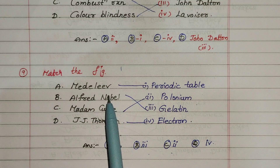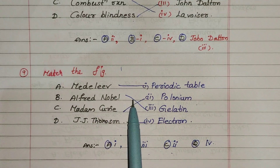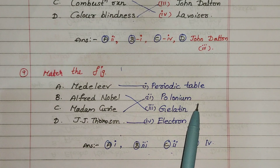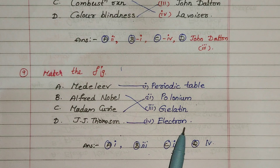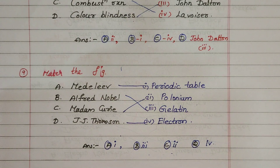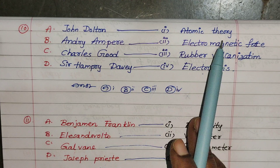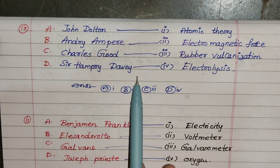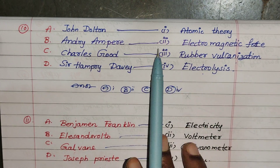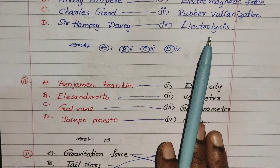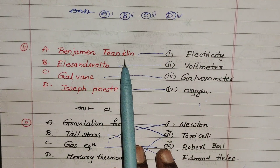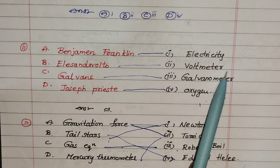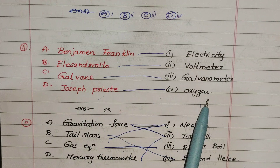Alfred Nobel — Gelatin, Glue. Madame Curie — Polonium, Radioactivity experiment. JJ Thomson — Electron discovery. John Dalton — Atomic Theory. André-Marie Ampère — Electromagnetic Force. Charles Goodyear — Rubber Vulcanization. Sir Humphrey Davy — Electrolysis. Benjamin Franklin — Electricity. Alessandro Volta — Voltmeter. Galvani — Galvanometer. Joseph Priestley — Oxygen.